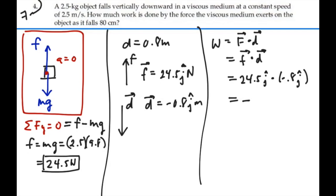And that is a negative 19.6 newton meters or joules. So the work that the viscous medium exerts on this object as it falls 0.8 meters is a negative 19.6 joules.